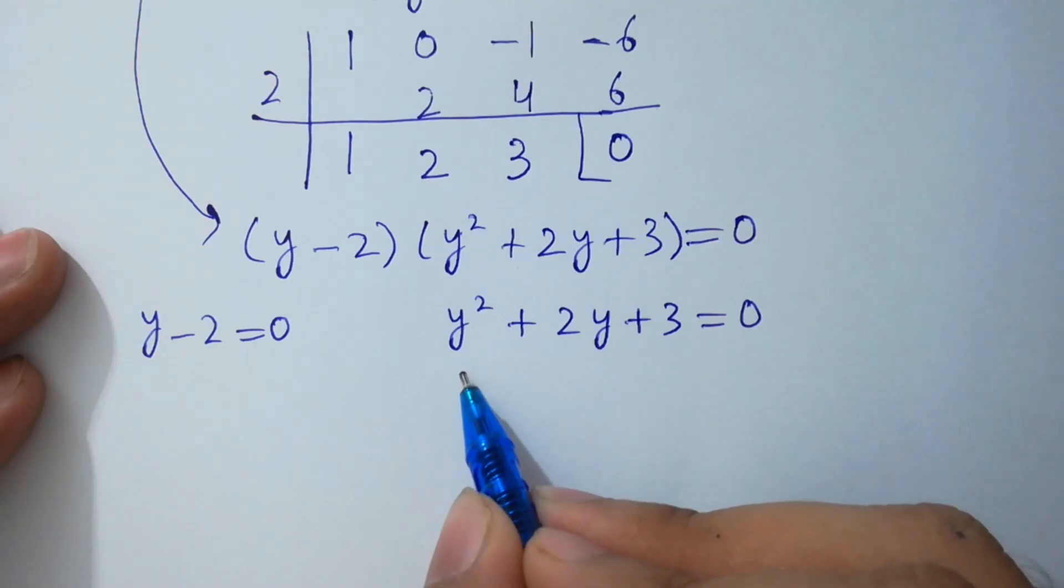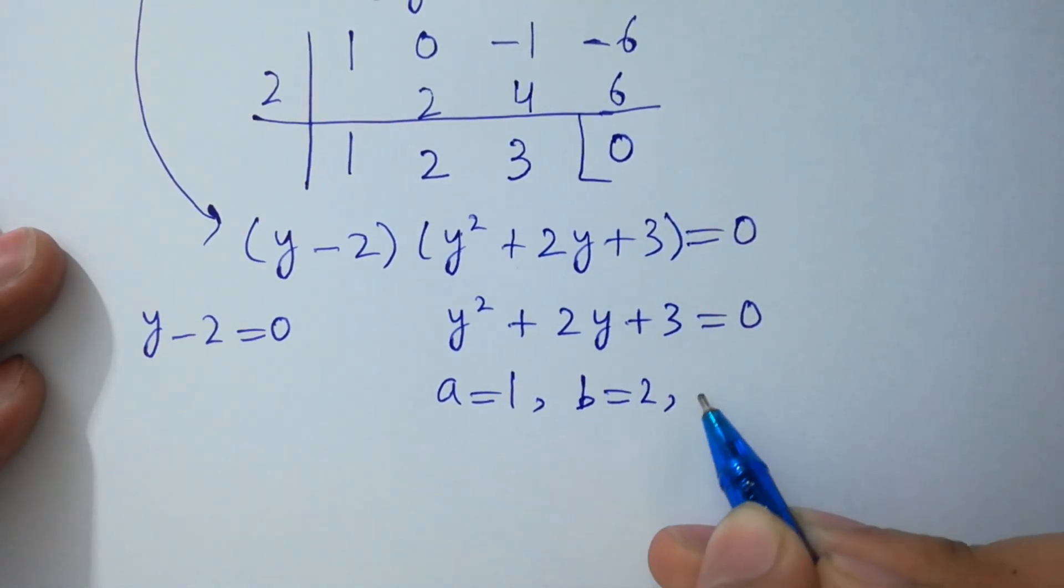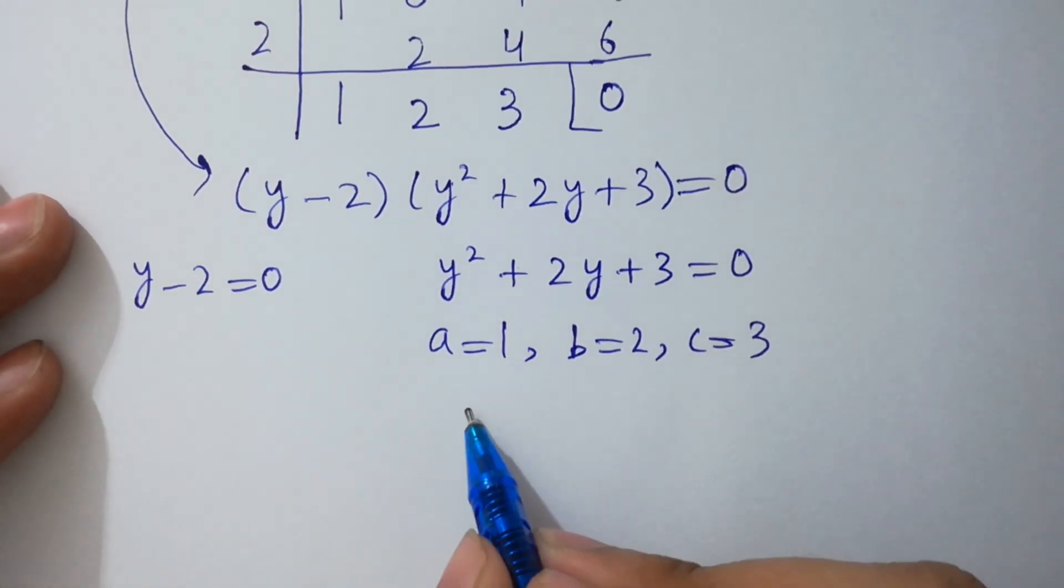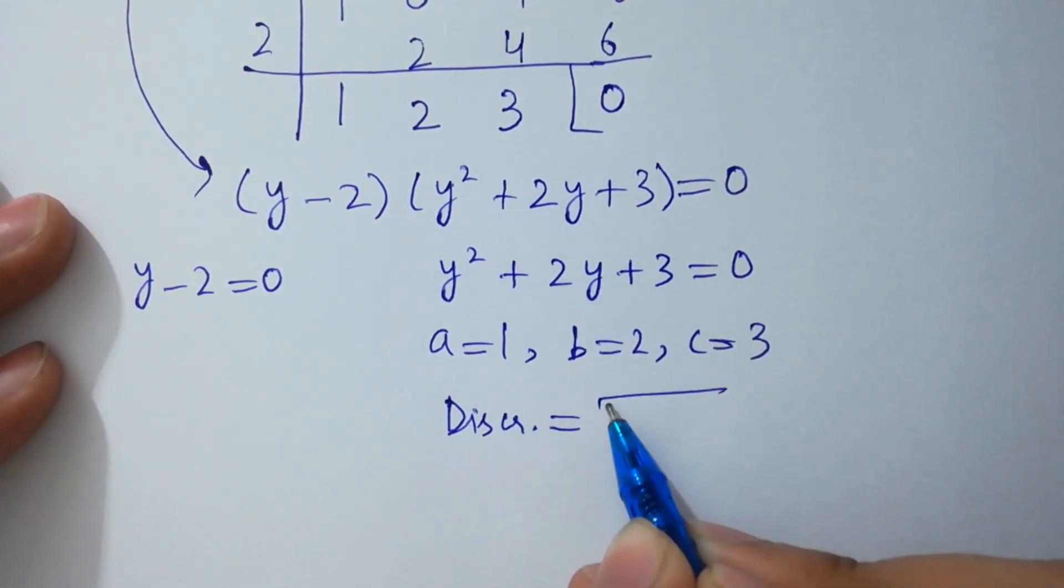Here, this is a quadratic equation, a equal to 1, b equal to 2, c equal to 3. Here apply, discriminant scale root.